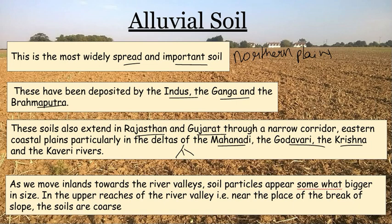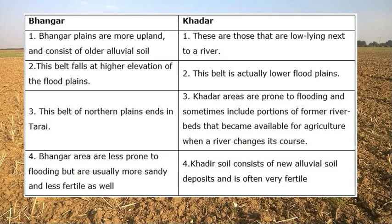Moving upwards in river valleys, the soil becomes coarser in size. As we studied in 9th class about the physical features of India, bhangar and khadar are types of alluvial soil. Bhangar is the older alluvial soil found at higher elevations on uplands, while khadar is the newer alluvial soil found at lower flood plains next to rivers.